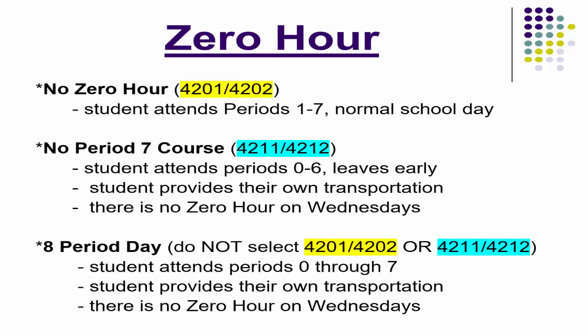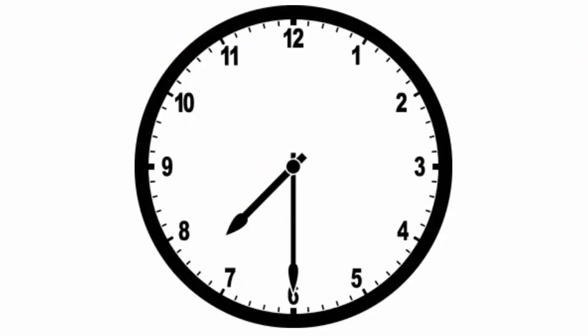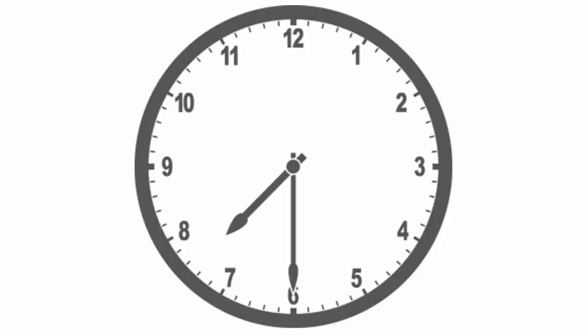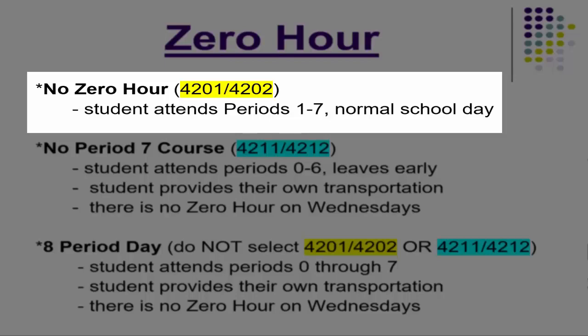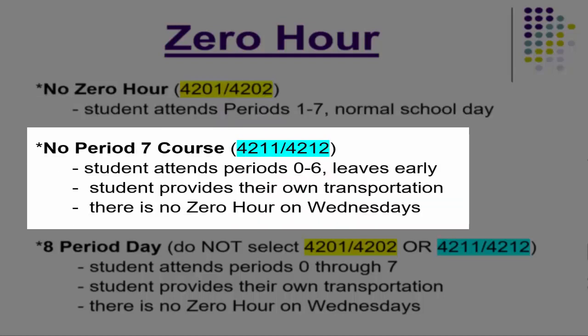Zero hour: plan on zero hour being early next year — 7:30 a.m. start time. When you look at the course selection sheet, you'll see 'no zero hour' as an option, courses 4201 and 4202. Students with no zero hour attend periods one through seven — that's a normal school day. If you choose 'no period seven' course, numbers 4211 or 4212, students attend periods zero hour through six, which means you leave early.